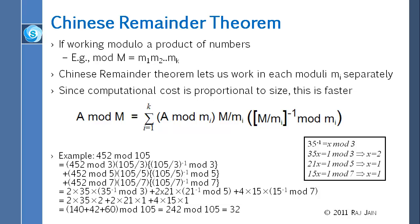Now obviously we won't be doing this for small numbers, because by the time we do all this Chinese Remainder Theorem we can calculate 452 mod 105 directly. But just imagine that 105 was a big number, and then this comes in handy. Obviously for that, 452 has to be a big number too. If the modulus is 100 digits, then for anything less than 100 digits you don't need to do anything. So anyway, 105 has three factors: 3 times 5 times 7. So we can calculate 452 mod 3, 452 mod 5, and 452 mod 7.